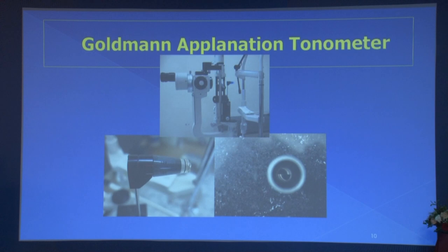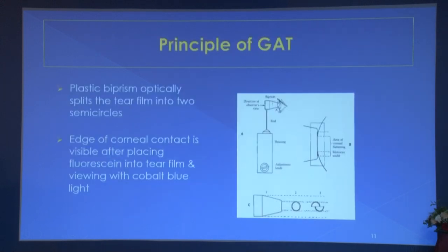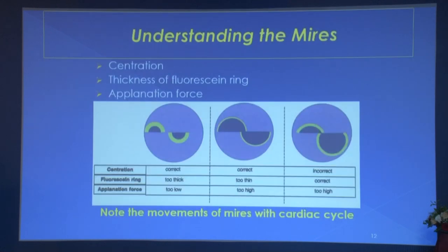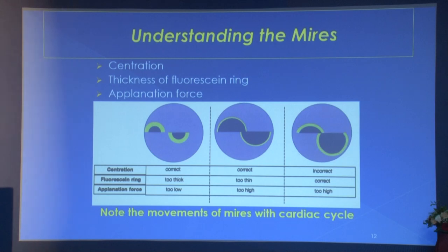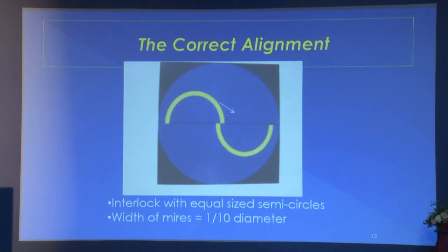The Goldmann applanation tonometer uses a plastic biprism that optically splits the tear film into two semicircles. The edge of corneal contact is visible after placing fluorescein in the tear film and viewing with cobalt blue light. Correct alignment requires the two semicircles to interlock with equal size and width — the mires width should be one tenth of the total diameter.